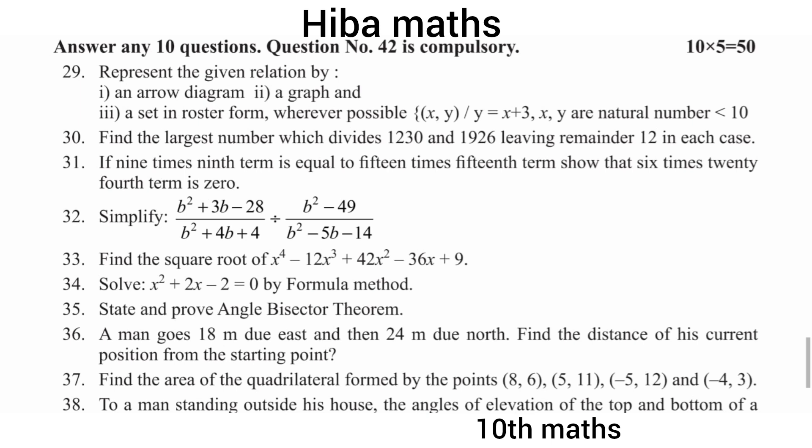Simplify b squared plus 3b minus 28. There are 4 factors in this case — we will solve, find the factors, cut and cancel, and get the balance.